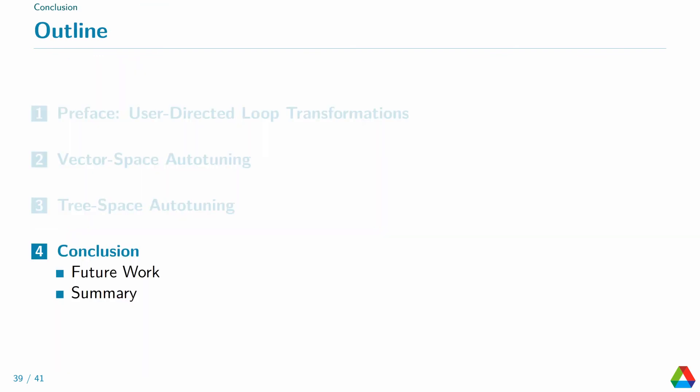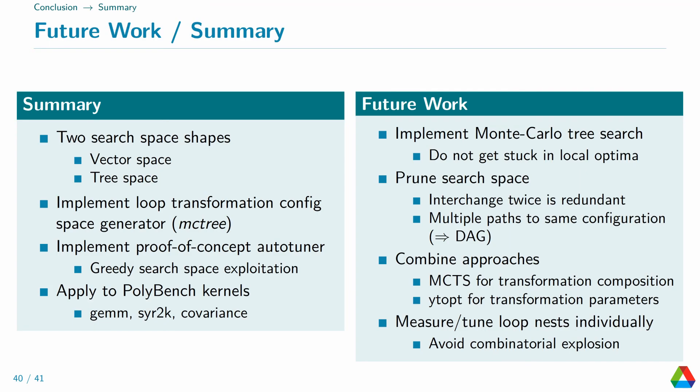Let's summarize our findings and what we are intending to do next. We showed that a tree-shaped search space can better represent the composition of loop transformations. What we are currently working on is to actually implement Monte Carlo Tree Search. On top of that, there are other improvements we can do. For one, we can prune the tree from nonsensical transformations, like interchanging a loop nest twice, or consider that in some cases the order in which transformations are applied does not matter. That's especially true when they apply to different loops. Also consider that vector space learning can be better for parameters like tile sizes. We might do a two-level search space. Each node in the search tree represents a vector space optimization for its transformation parameters. Finally, we should be able to tune multiple loop nests in a program separately. Our current experiments contain just one loop nest each.